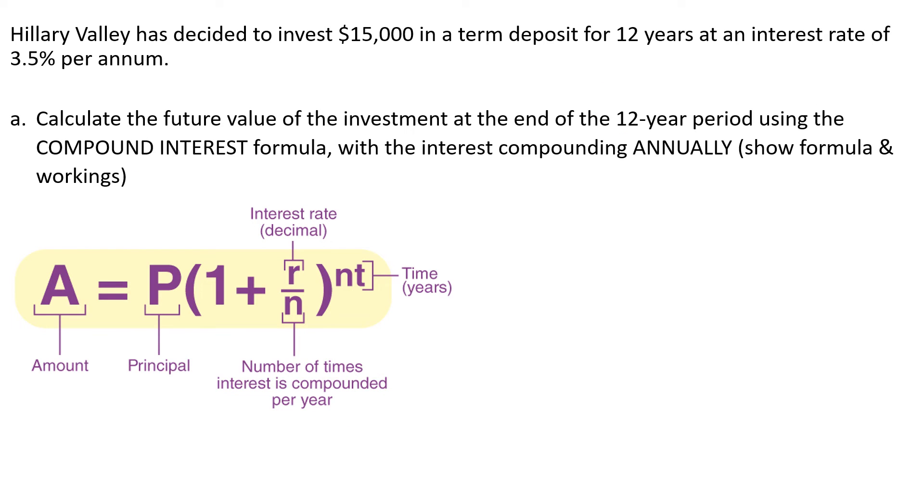So again, step three, write your equation. 15,000, 1 plus N equals 1. So we don't have to worry about that. 0.035 to the power of 12. We punch that in our calculator. And we get 22,666 if we round to the nearest dollar.